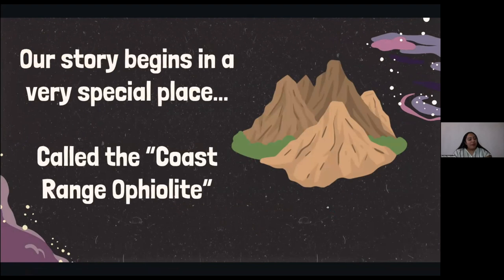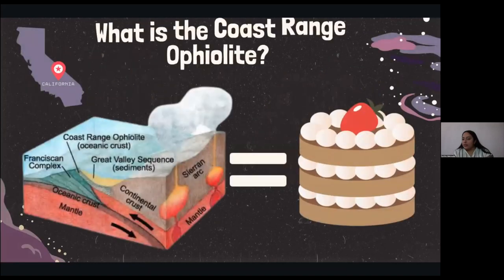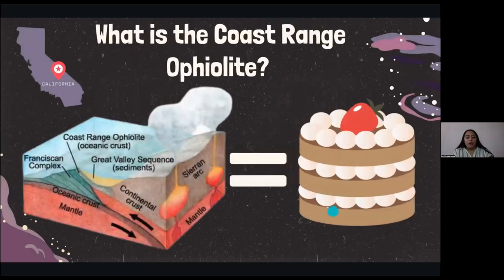First, our story begins in a very special place called the Coast Ranch of Violet. You might be thinking, what is the Coast Ranch of Violet?